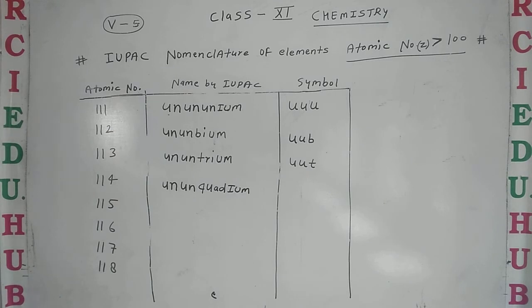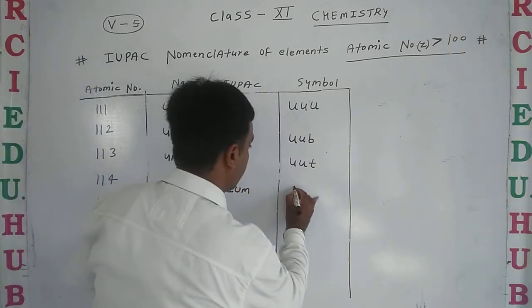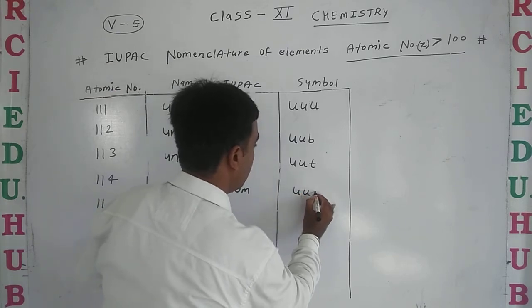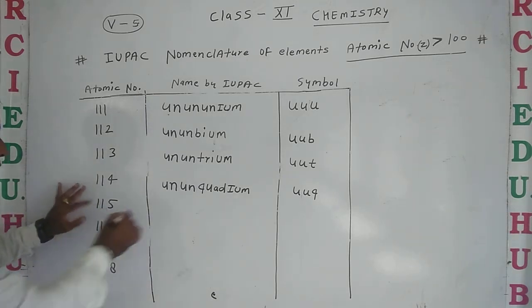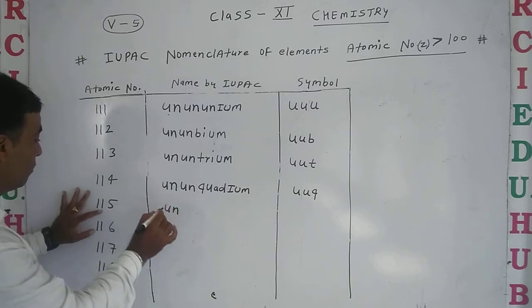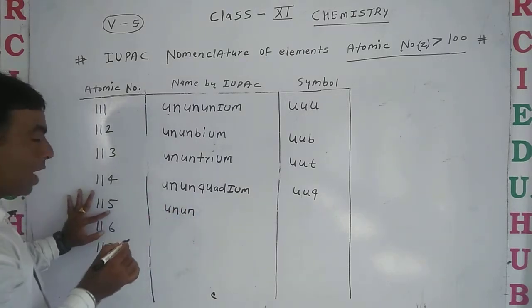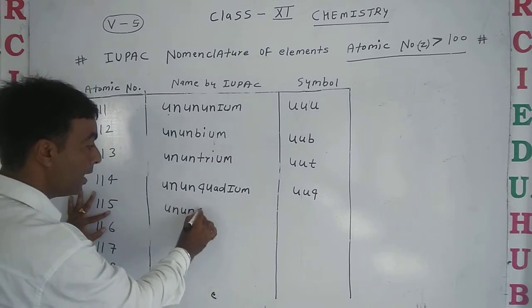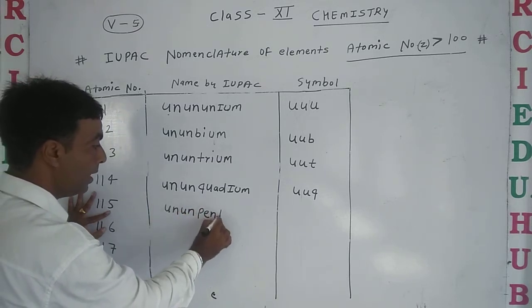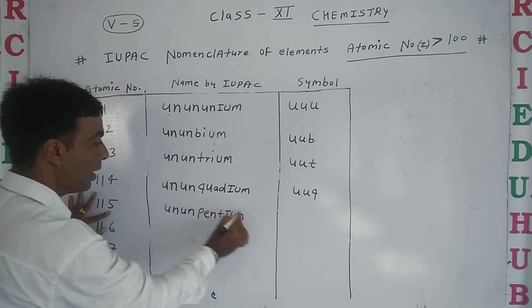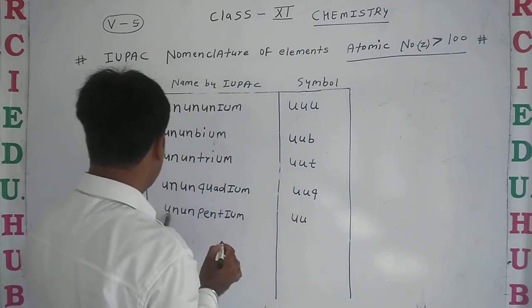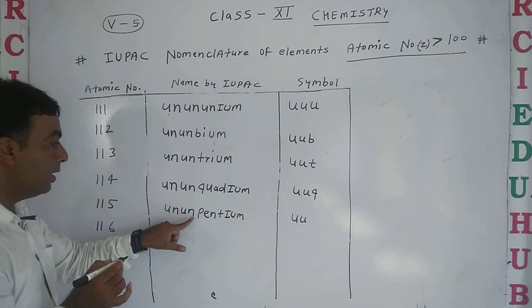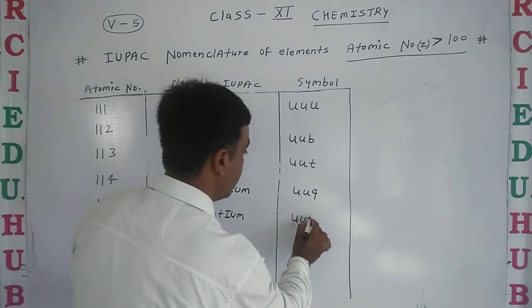Next, one one five. First 'un', then 'un', and five's word is 'pent'. So 'pent' '-ium' becomes ununpentium. Symbol will be U U P - Uup. Very easy.